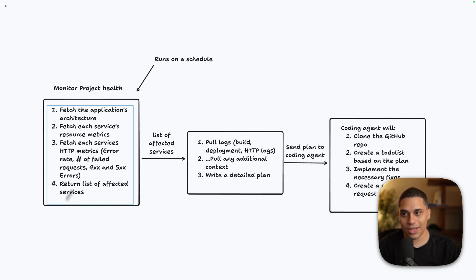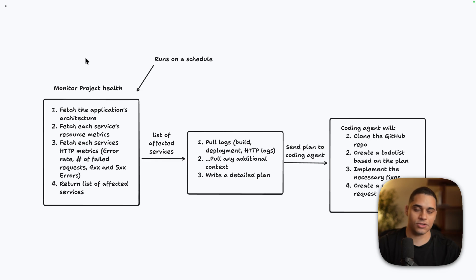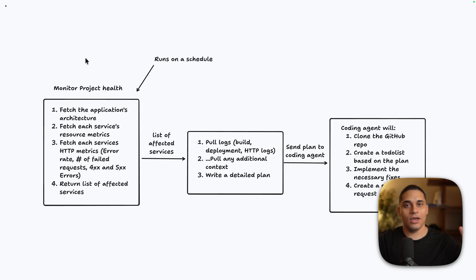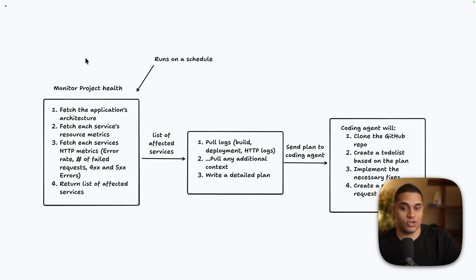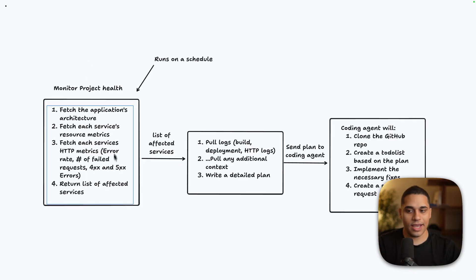You might wonder why not make this an alert-based system using webhooks. I'd argue it's better to analyze a slice of time rather than just reacting to a single threshold being met, because it can get noisy. Imagine a spiky workload where you reach 80% CPU utilization briefly — that might not mean there are actual issues when you look at the bigger picture.